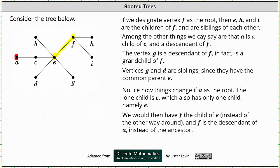If we take the path from F back to the root, it includes the vertex A, the root, which indicates F is a descendant of A and A is an ancestor of F. It was the other way around when F was the root.